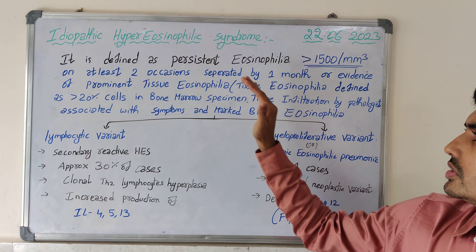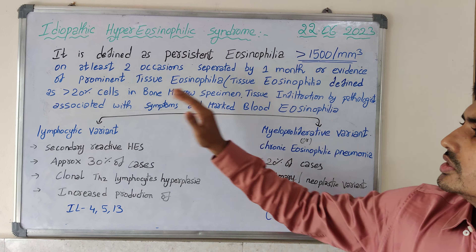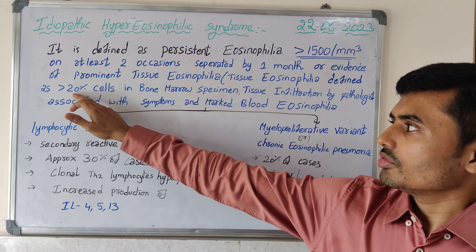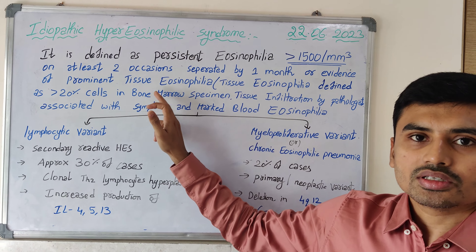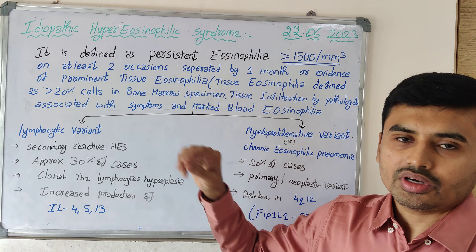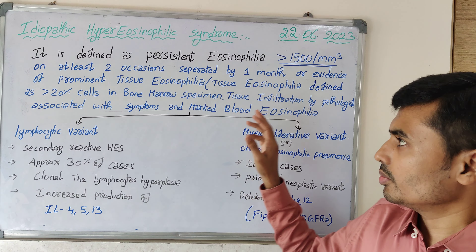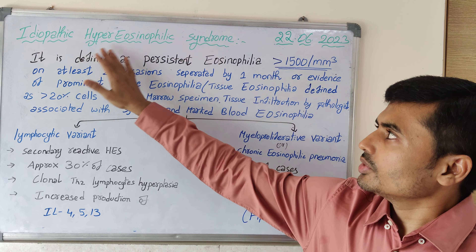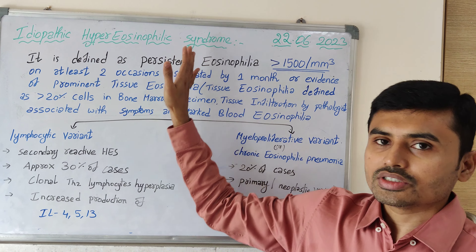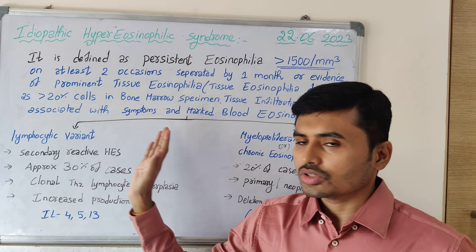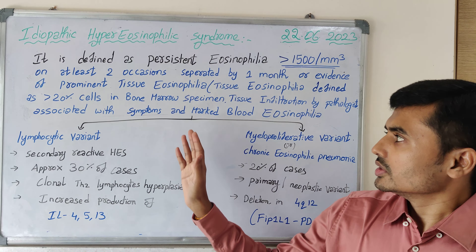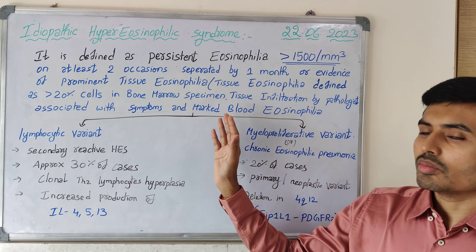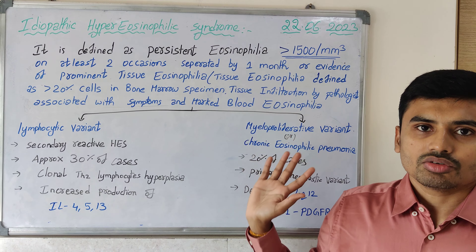Tissue eosinophilia is defined as more than 20% cells in the bone marrow when seen by a pathologist. Idiopathic hypereosinophilic syndrome is associated with symptoms and marked blood eosinophilia.